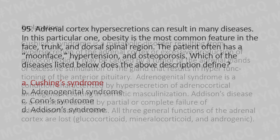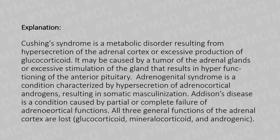Cushing syndrome is a metabolic disorder resulting from hypersecretion of the adrenal cortex or excessive production of glucocorticoids. It may be caused by a tumor of the adrenal gland or excessive stimulation of the gland resulting in hyperfunctioning of the anterior pituitary. Adrenogenital syndrome is characterized by hypersecretion of the adrenal cortical androgen resulting in somatic masculinization. Addison disease is caused by partial or complete failure of adrenal cortical functions, with loss of glucocorticoids, mineralocorticoids, and androgens.